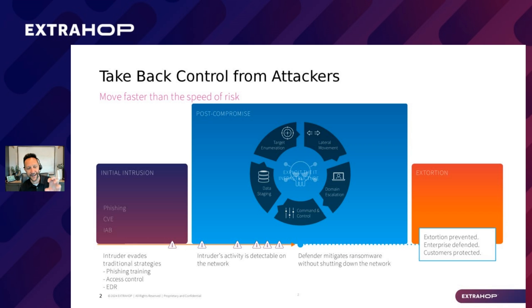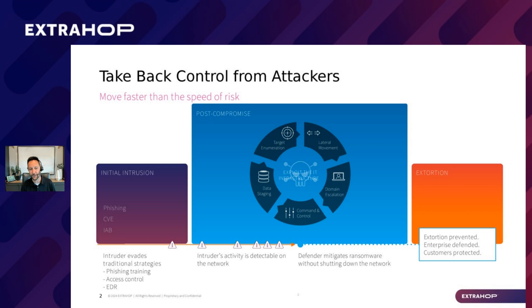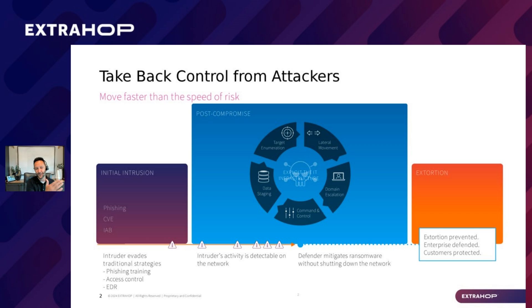We have to understand that people will get in. Threat actors will get into our environment. We need to be able to catch them when they do and understand all the steps they take to block them early on. Because if you look at that last stage — extortion — we don't want to just block the extortion. If we know threat actors are able to get that initial intrusion, we don't want to just say we're seeing things being encrypted or a lot of data leaving our organization. If you're setting up your defenses to only look at initial intrusion or extortion, you probably don't have the right defense strategy.